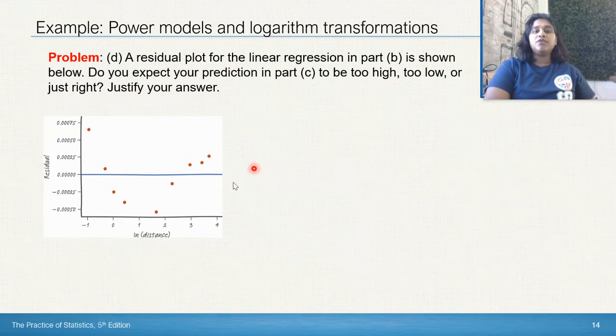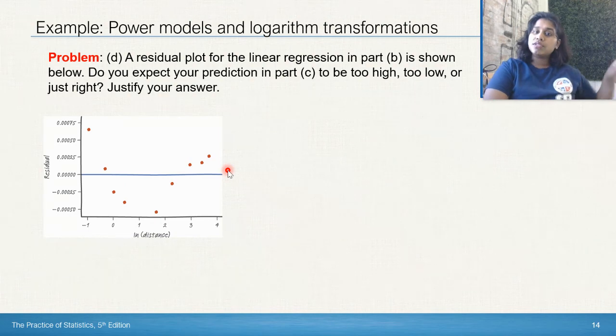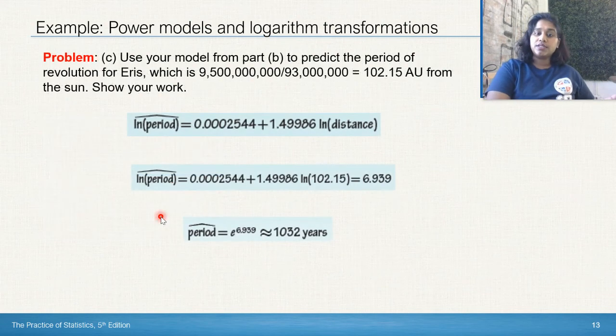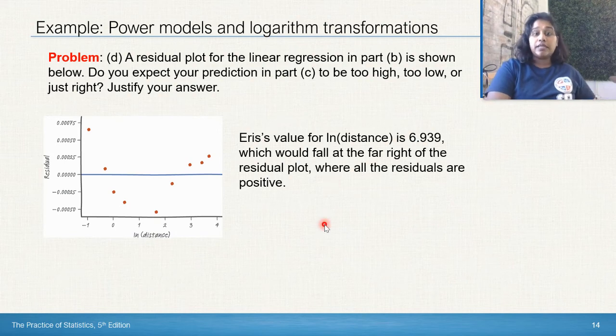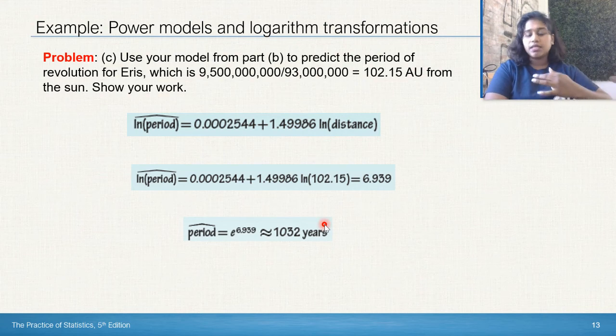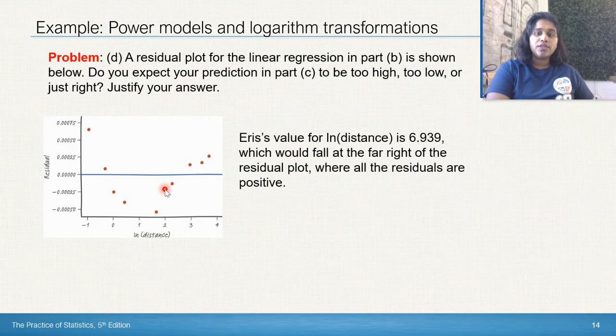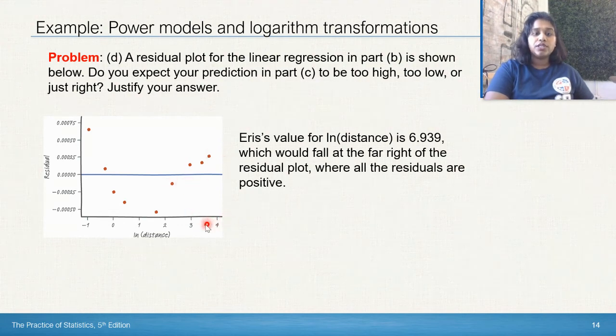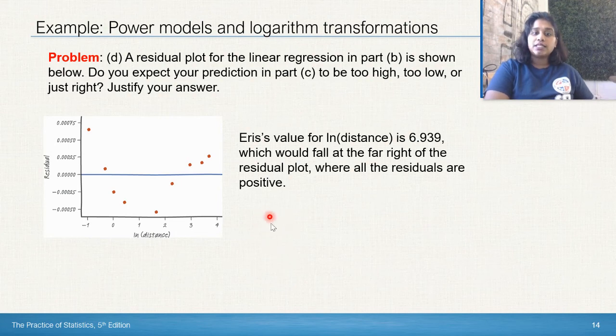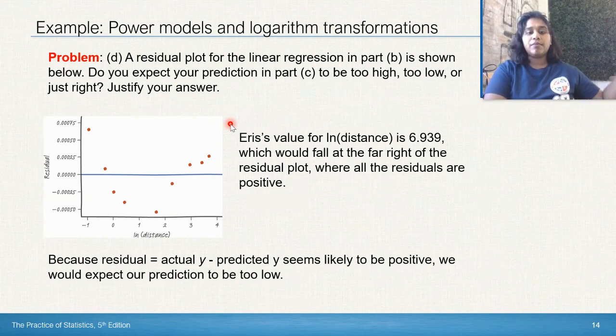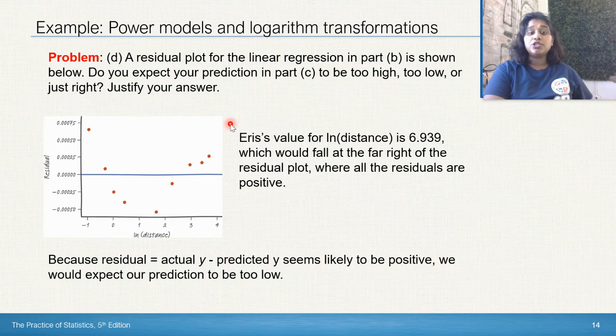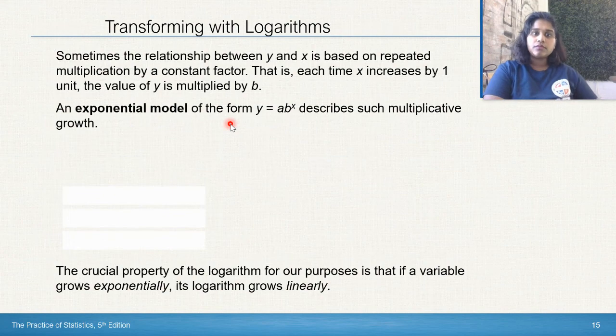If we created the residual plot for the linear regression from the scatter plot we used in Part B, can we expect the prediction in Part C to be too high? So 1032, too low, or just right? If Eris's value is 6.39, and we're going to use 6.39 because that's what our residual plot will mimic, not the 1032, which would be the end answer. So if I use 6.39, it would fall on the far right of the residual plot. My residual plot only goes to 4. So it would be over here on the right-hand side, and all of my residuals tend to be positive up here because there's my curved residual smile that we're looking for. And because the residual is equal to the actual y minus the predicted y seems likely to be positive, we would expect our prediction to actually be too low.